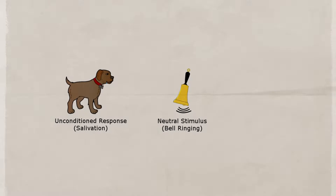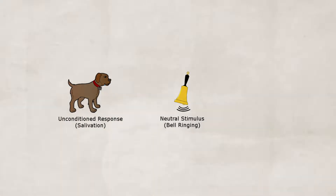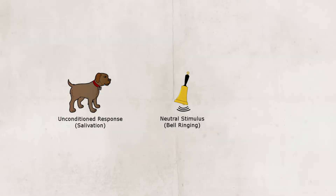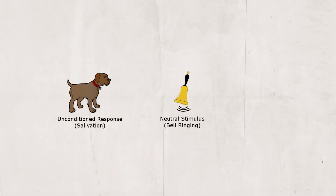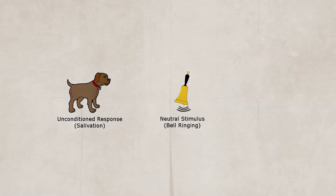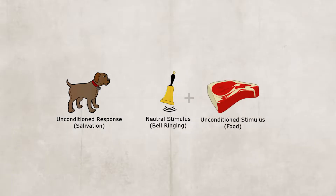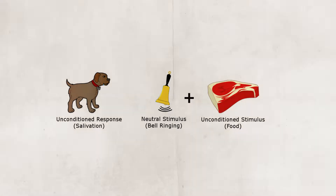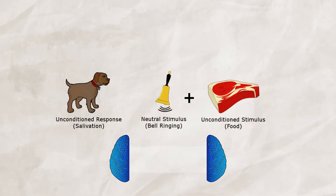For Pavlov, the neutral stimulus was a tone. Before Pavlov would place the food down for the dog, he would ring a bell. This is the initial process of associating the neutral stimulus — the bell — with the unconditioned stimulus — the food. This is known as acquisition.